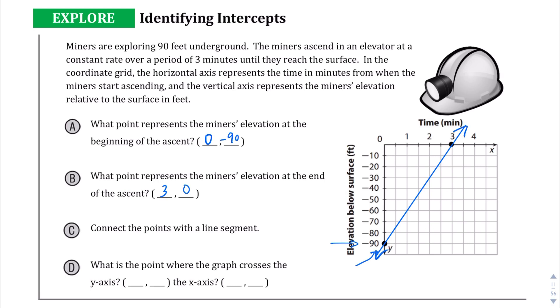So what is the point where the graph crosses the y-axis and the x-axis? Well, the y-axis is crossed right here at 0, negative 90, and it crosses the x-axis here at 3, 0. Okay, and that's basically what we're doing. We're looking for the y-intercept where it crosses the y-axis, and we're looking for the x-intercept.